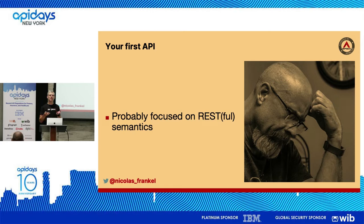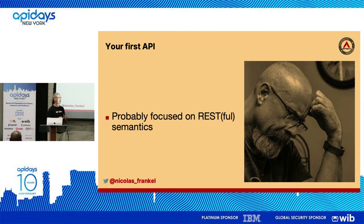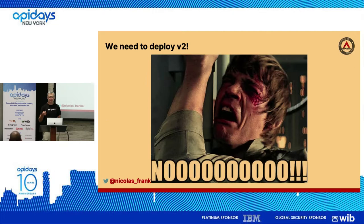Probably the problems you had were: how should you define your entities, what would be the boundaries, how to focus on REST semantics, and when should I use POST versus PUT? This is important — these are the problems I had. Stuff like versioning you didn't think about, so when your business comes to you and says 'let's do v2,' you might have a bad reaction.